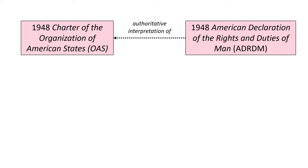The OAS Charter mentions human rights but does not actually elaborate on them. In this sense the whole constellation is comparable to the UN Charter system, where the UN Charter mentions human rights but it's the Universal Declaration which, as a non-legally binding instrument, elaborates on what these mean more concretely. Similarly, the OAS Charter mentions human rights but it's the American Declaration which provides an authoritative interpretation of what these rights concretely entail.